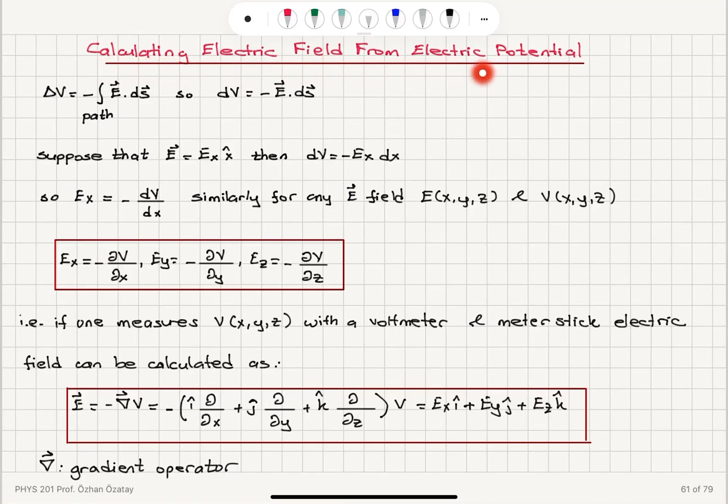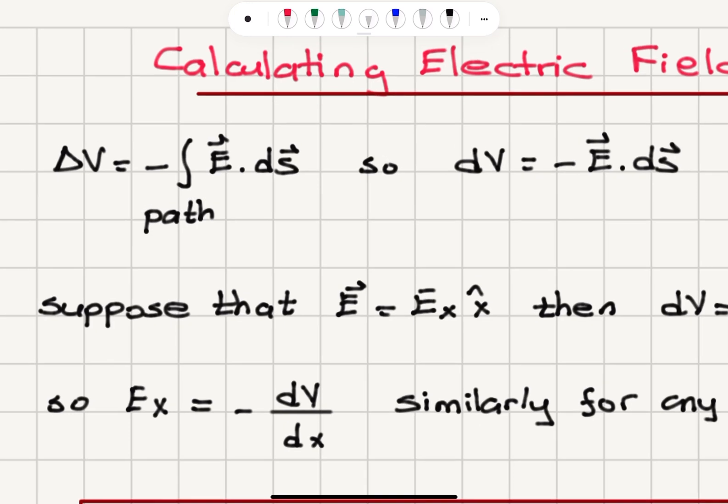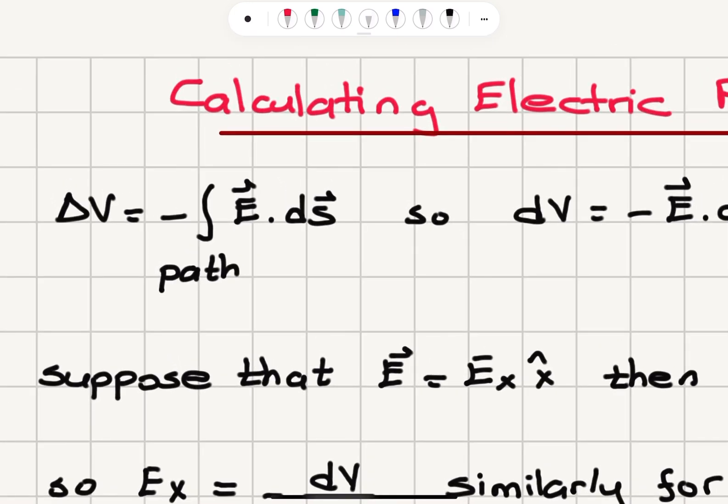Calculating electric field from electric potential. Remember the relationship between the potential difference and the electric field. The potential difference between two points can be calculated as minus the path integral E dot ds.